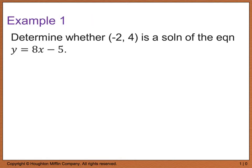Let's look at example 1. It says to determine whether the ordered pair negative 2, 4 is a solution of the equation y equals 8x minus 5. To determine whether or not it's a solution, we're going to take this ordered pair — negative 2 is our x value, 4 is the y value — and plug those into our equation.